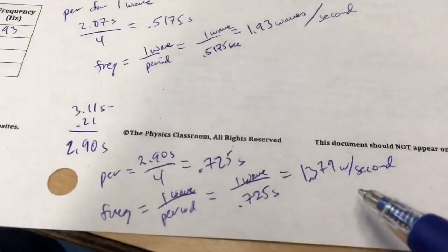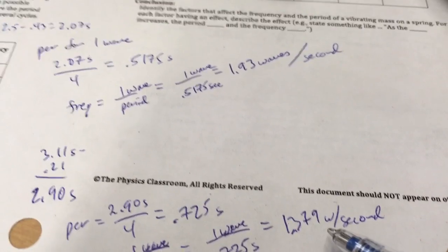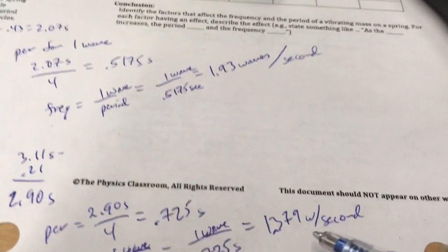And that's waves per second. So, more waves or fewer waves? When you add mass, you get fewer waves per second. It's going slower.